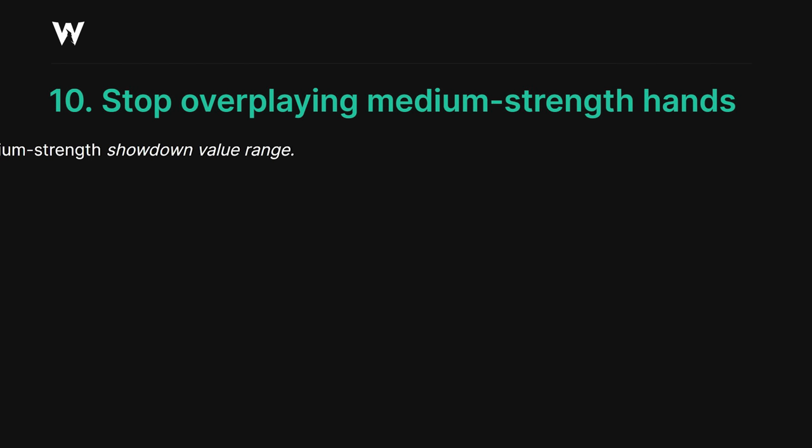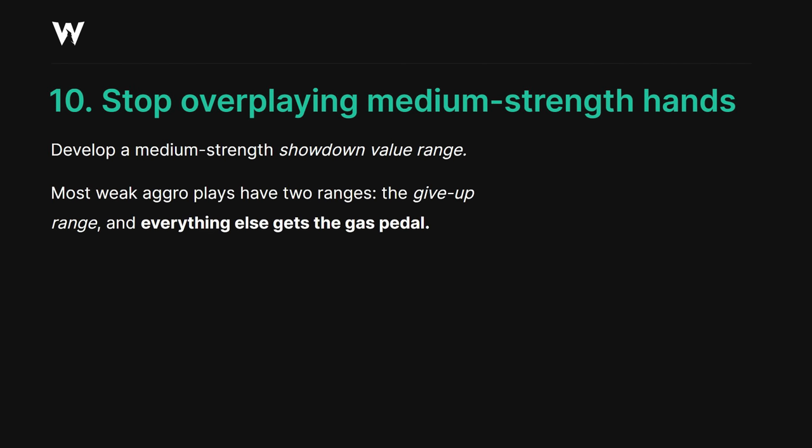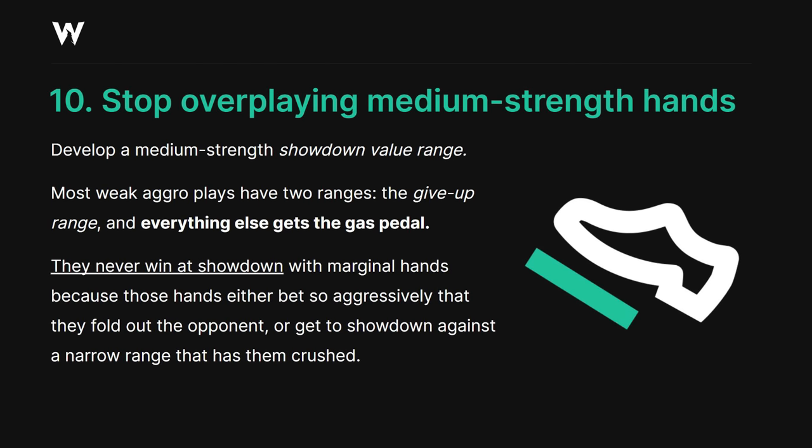Tip number ten, the final tip: stop overplaying medium-strength hands. This is really common. You need to develop a medium-strength, showdown-value, pot-control, check-back kind of range. Most weak aggressive players have two strategies — the give-up range and everything else gets the gas pedal. This type of player never wins at showdown with marginal hands because they either bet so aggressively they fold out their opponent, or they get to showdown against a narrow range that has them crushed. A better way is to construct value and bluffs — polarizing using strong hands and weak hands — so the opponent is guessing with every hand in between. Your medium hands, which check more and realize their equity, get to showdown against a range they can actually beat. You want more than give-up and gas pedal. You also want medium hands that just want to realize equity and go to showdown.